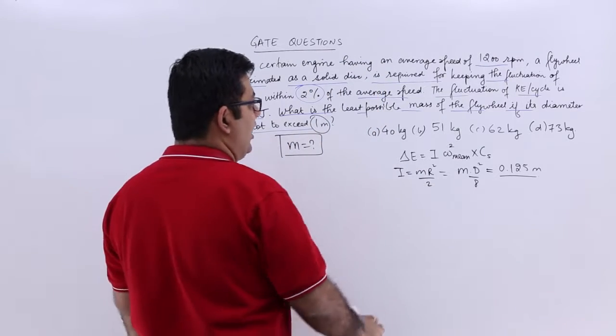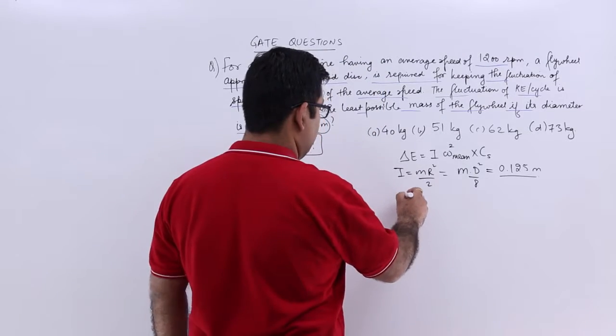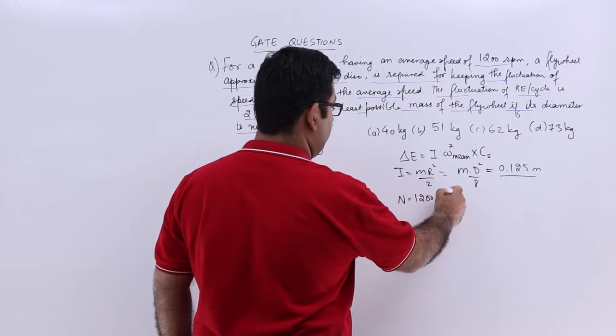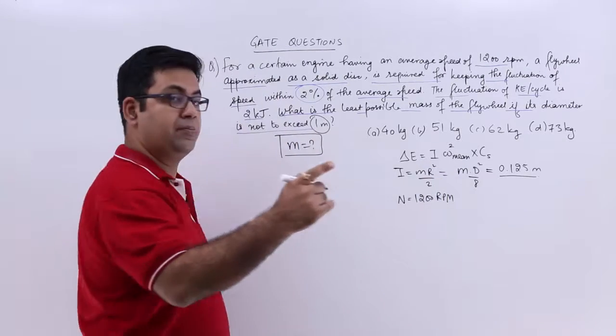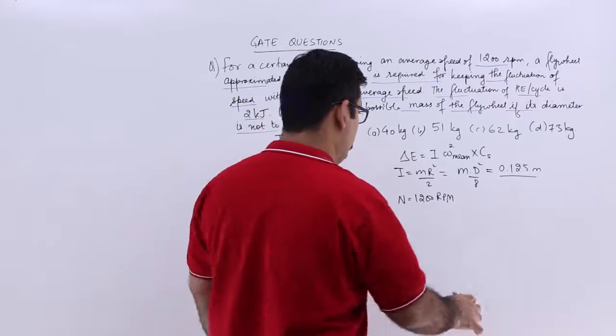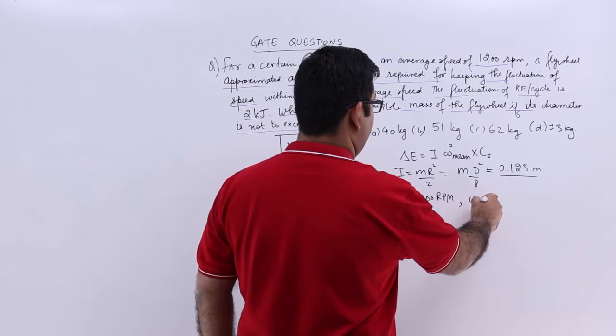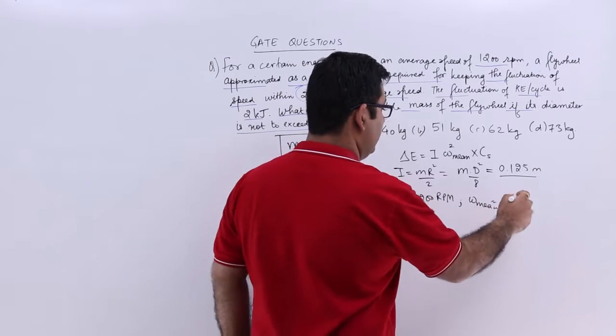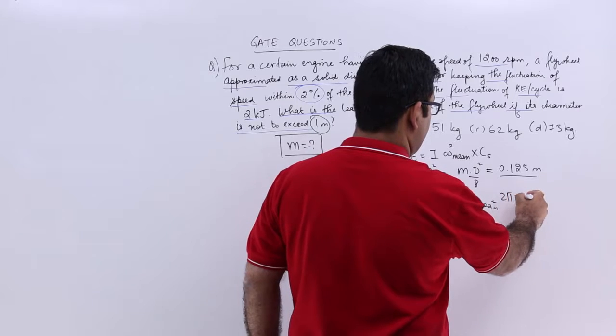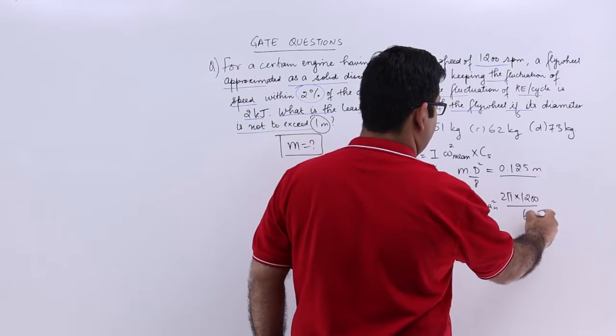Now the RPM is 1200. So we can easily find out the omega. So omega, let me say this is omega mean which is 2 pi into 1200 upon 60.